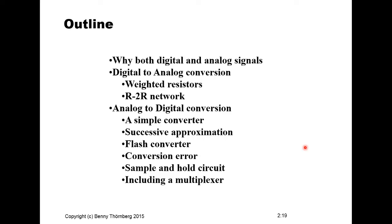We will start with a small motivation for why we need both digital and analog signals in a system, and continue with the principles of digital-to-analog conversion using two different methods, then analog-to-digital conversion starting with a simple converter and then the successive approximation and flash converter. We will also discuss conversion error, the sample-and-hold circuit, and the use of a multiplexer in combination with the A-to-D converter.